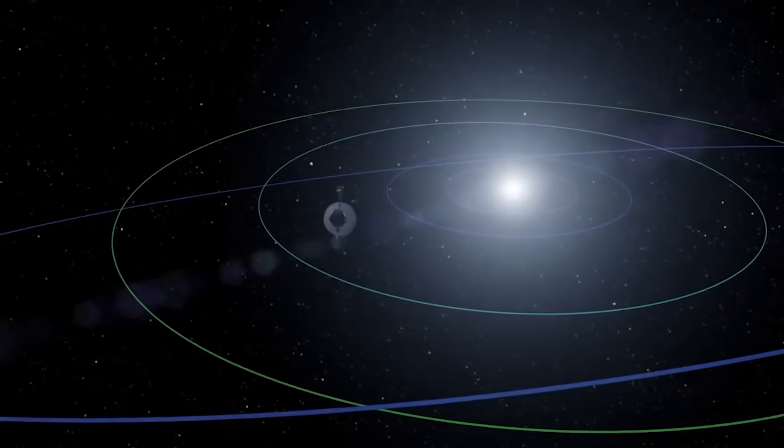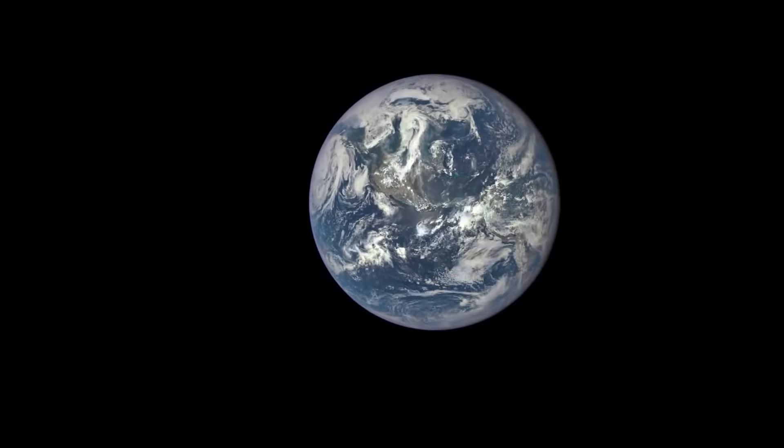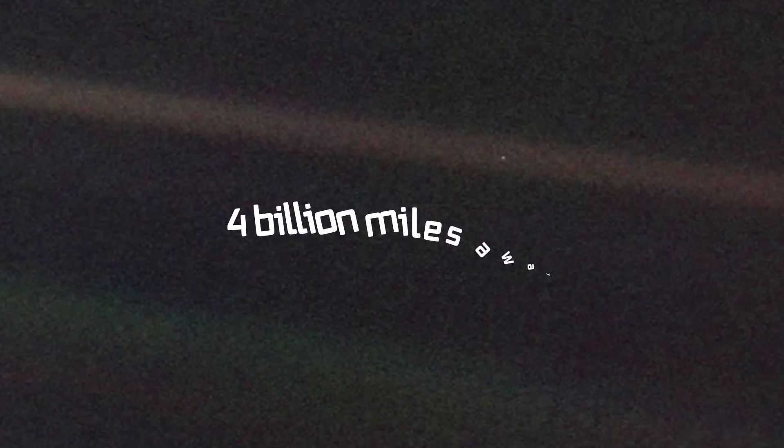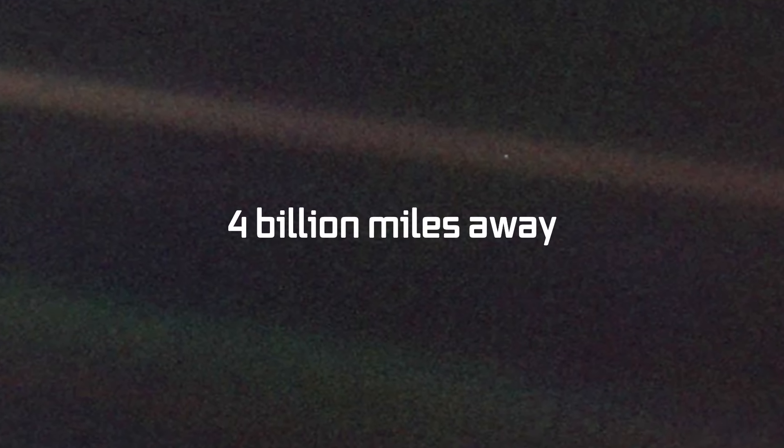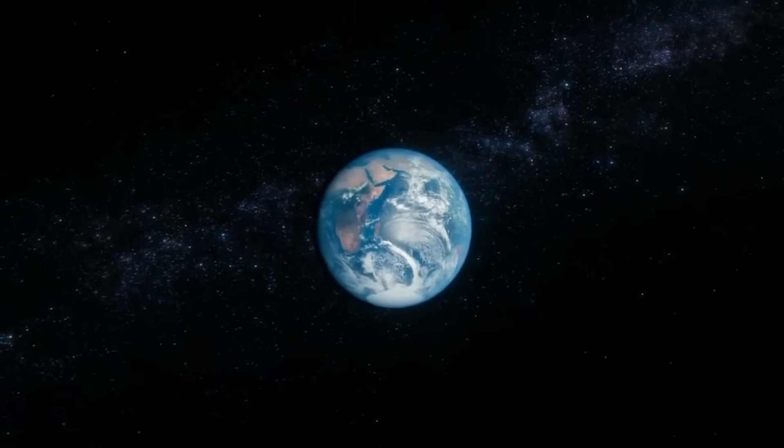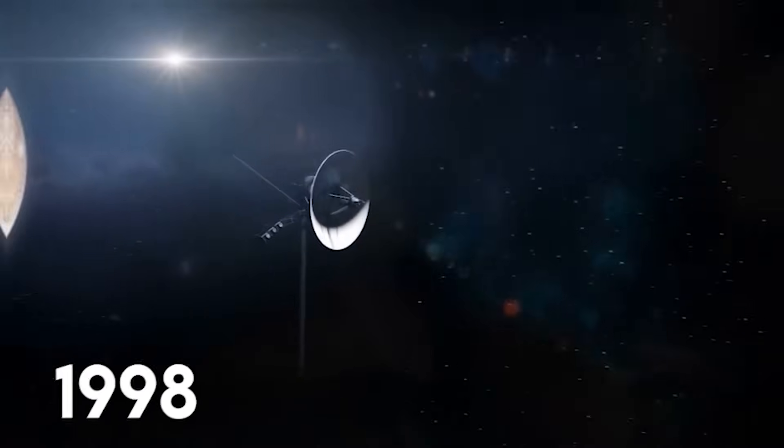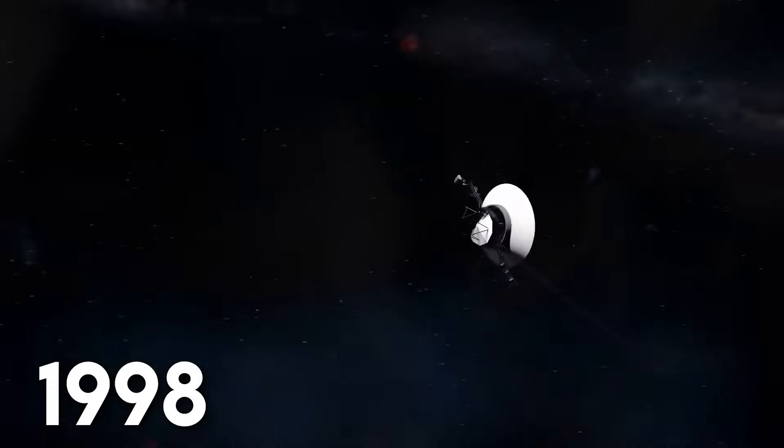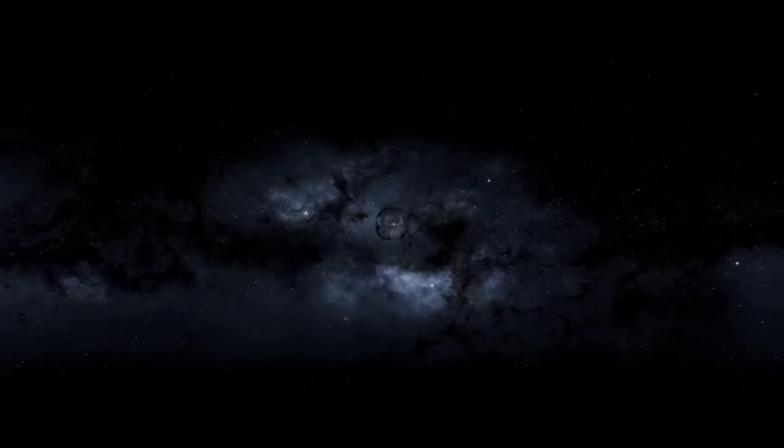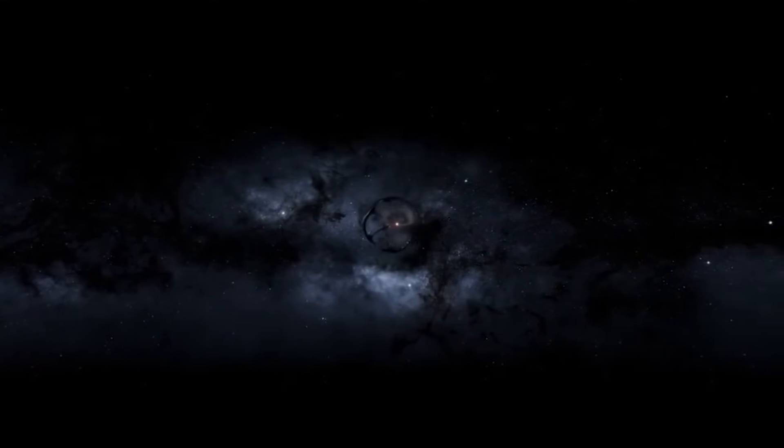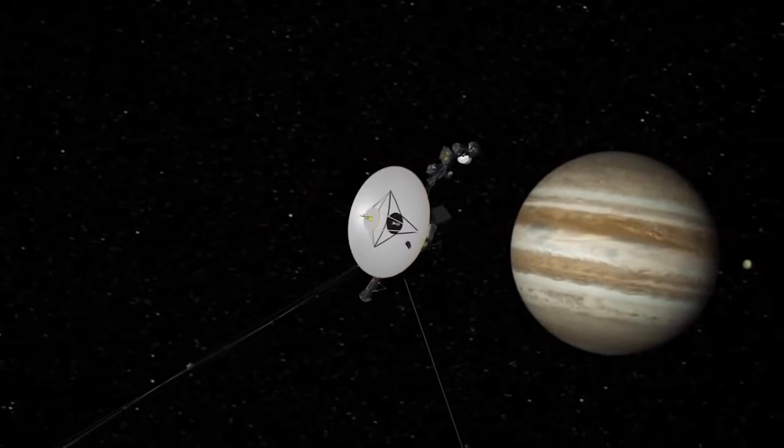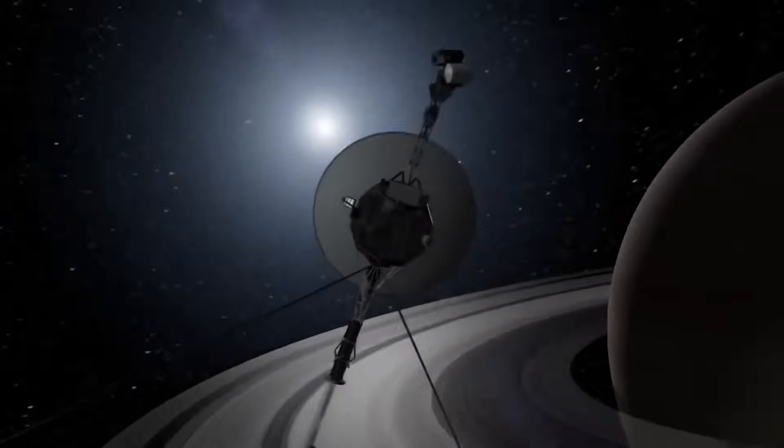On Valentine's Day 1990, the spacecraft turned its camera homeward and snapped the renowned pale blue dot image of Earth from 4 billion miles away. Humbling and iconic, this view puts our planet in proper cosmic perspective. In 1998, Voyager 1 sailed beyond the reach of any previous spacecraft, pioneering uncharted territory. It remains the farthest human creation in space.